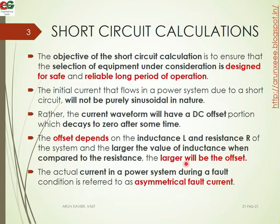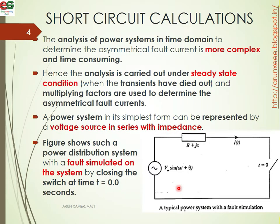The actual current in the power system during fault conditions is referred to as the asymmetrical fault current. We are calling it the asymmetrical fault current. The analysis of a power system in the time domain to determine the asymmetrical fault current is more complex and time consuming.